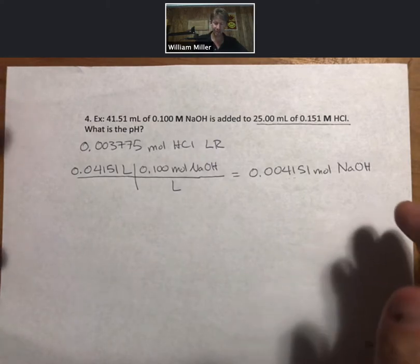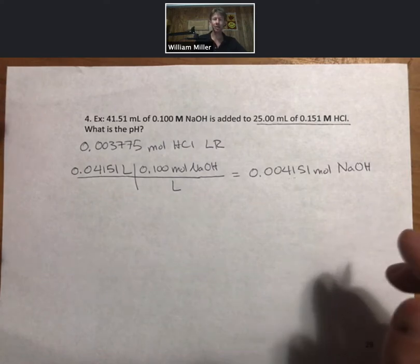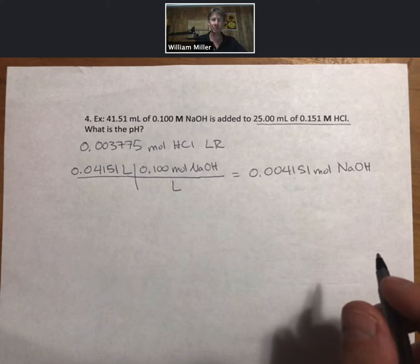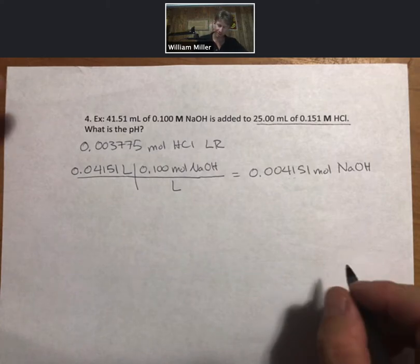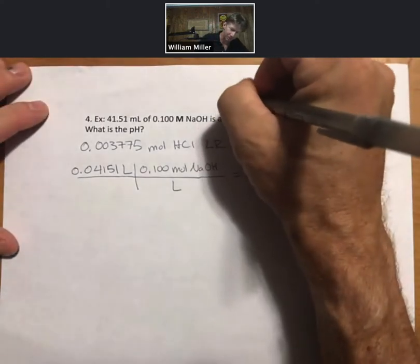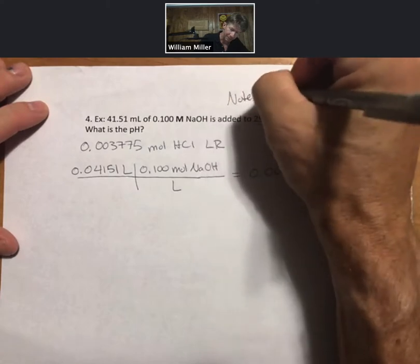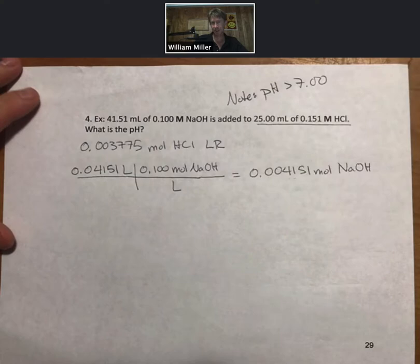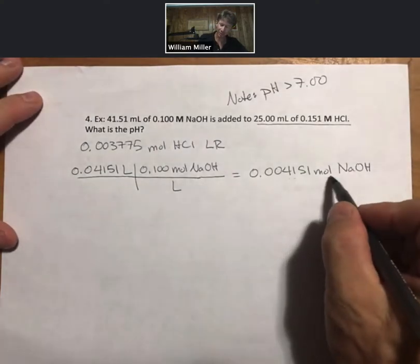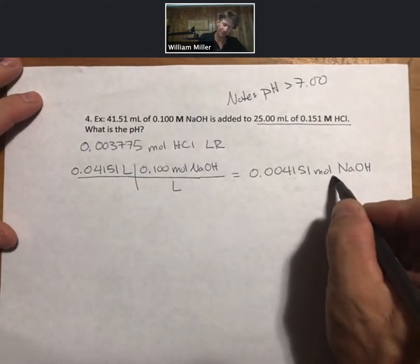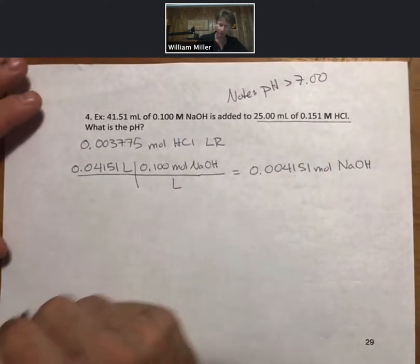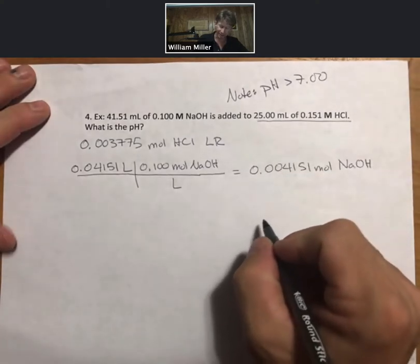Because I know these calculations can be long and it's easy to sort of forget that we know some things about what the answer should be already. So note pH is greater than 7.00 which is consistent with having excess sodium hydroxide and hydrochloric acid as a limiting reactant. And we'll check in with that at the end.